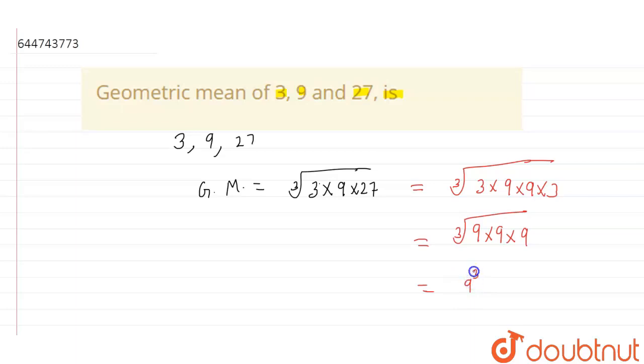So it will be 9 cube and cube root is 1 by 3. So we will cancel out 3 here and we will get 9. So 9 is the answer.